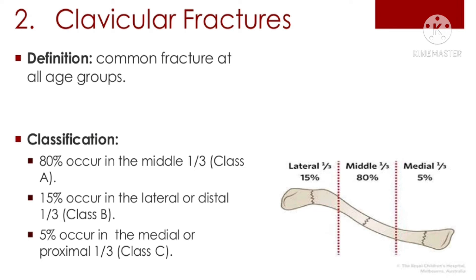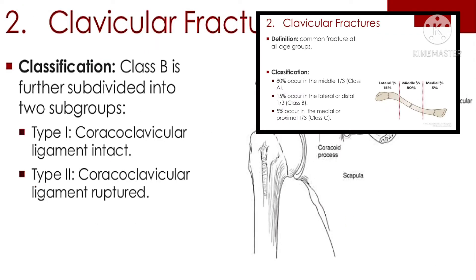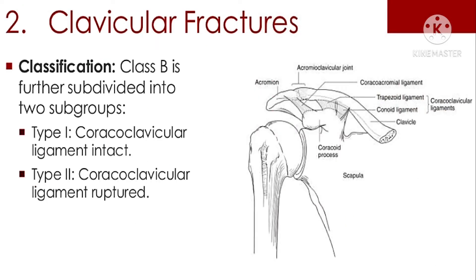Clavicle fracture is a common fracture of all age groups. Classification: 80% occur in the middle one-third (Class A); 15% occur in the lateral or distal one-third (Class B); 5% in the medial or proximal one-third (Class C). Class B is further subdivided: Type 1 — coracoclavicular ligament intact; Type 2 — coracoclavicular ligament ruptured.